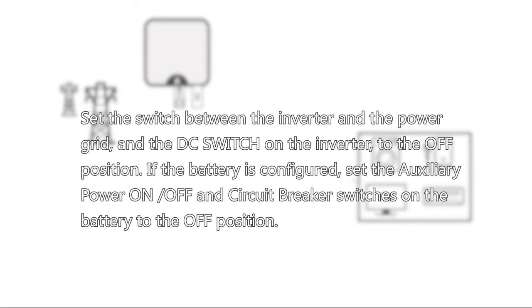Set the switch between the inverter and power grid, and the DC switch on the inverter to the OFF position. If the battery is configured, set the auxiliary power ON/OFF and circuit breaker switches on the battery to the OFF position.